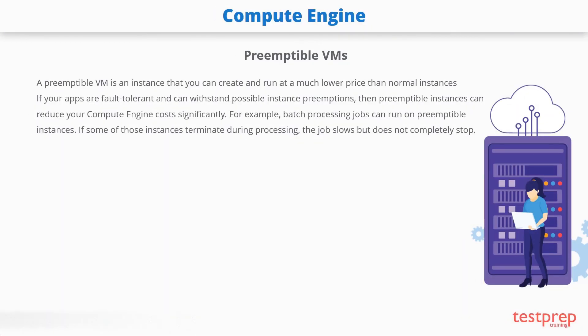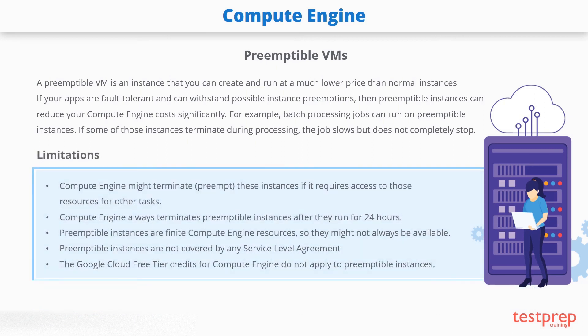Preemptible instances function like normal instances but have the following limitations. Compute Engine might terminate these instances if it requires access to those resources for other tasks. Compute Engine always terminates preemptible instances after they run for 24 hours. Preemptible instances might not always be available. Preemptible instances are not covered by any service level agreement. The Google Cloud free-tier credits for Compute Engine do not apply to preemptible instances.